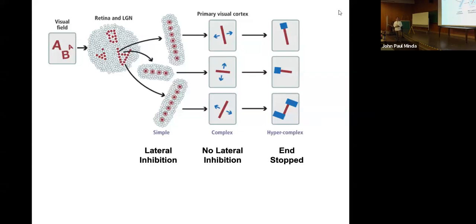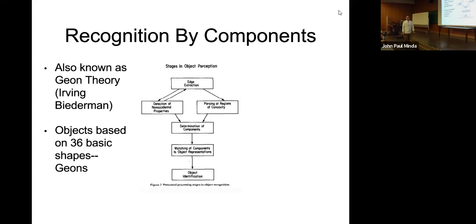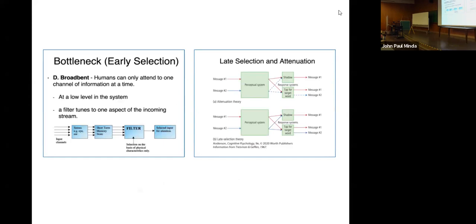You should know about the recognition by components theory — the geon theory, associated with Biederman. I might refer to it as Biederman's theory on object recognition or as the recognition by components theory — both terms could appear. Know the steps: edge extraction, non-accidental properties (know what they are and how to recognize them), and the idea that objects are recognized by comparing them to geon representations — those 36 basic volumetric primitive shapes.